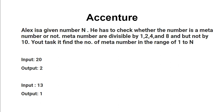The question is very easy — if you read it once or twice you will understand what they are asking. Alex is a person who got a number N and needs to check if that number is a meta number or not. A meta number should be divisible by 1, 2, 4, and 8, but not by 10.